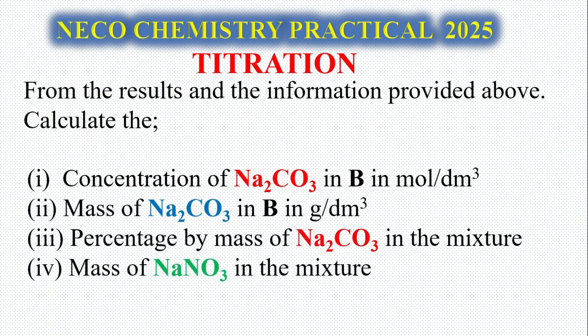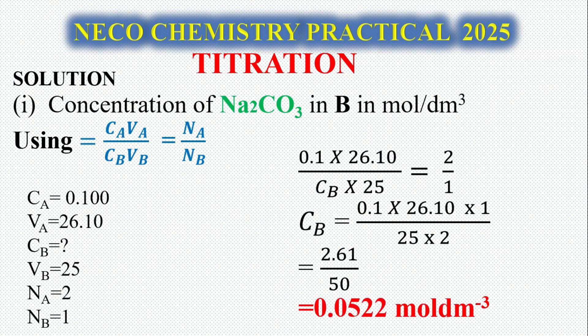From the results and information provided, calculate: (i) concentration of Na2CO3 in B in mol per dm³. Using CaVa/Na = CbVb/Nb, you can see the parameters here, then substitute the values respectively. You will have your CB to be 0.0522 mol per dm³. Remember, it's three significant figures to get your mark. For NECO marking: one mark for ratio, one mark for substitution, one mark for the formula, and one mark for final answer.